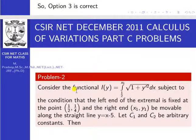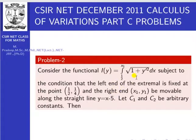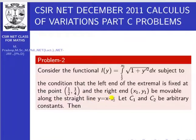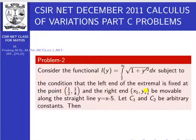So, this is the problem. Consider the functional I of y equal to integral from 1/2 to x1 of square root of (1 plus y-dash squared) dx, subject to the condition that the left end of the extremal is fixed at the point (1/2, 1/4) and the right end (x1, y1) be movable along the straight line y equal to x minus 5.